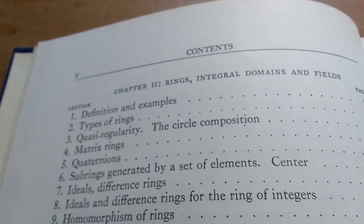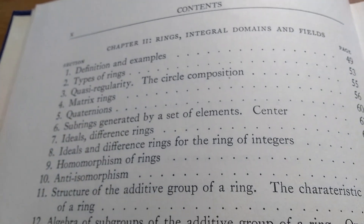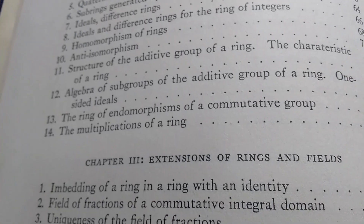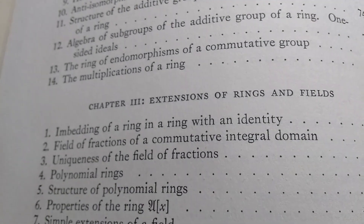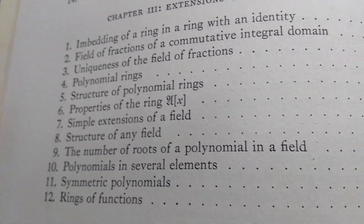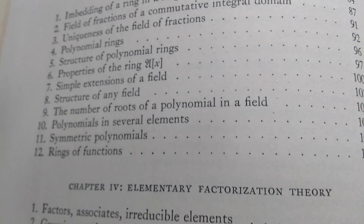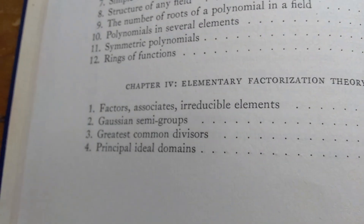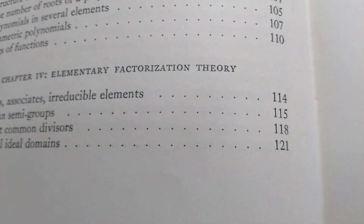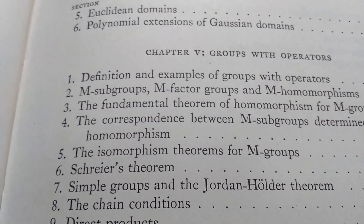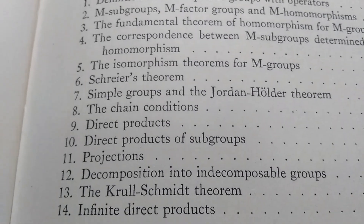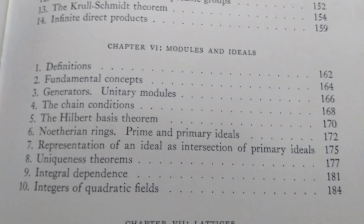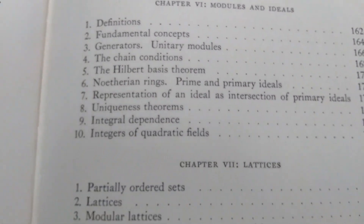Already on page 49 he's at rings, integral domains, and fields. He moves very, very quickly through the topics. I'll try to go slow so you can read the topics. Extensions of rings and fields — cool stuff. The number of roots of a polynomial in a field — that's on page 104. Rings of functions, that's 110. Factorization theory — talks about PIDs, principal ideal domains, on page 121. Groups with operators. Direct products. Modules and ideals. The Hilbert basis theorem — I remember proving that long ago — page 170. Lattices.